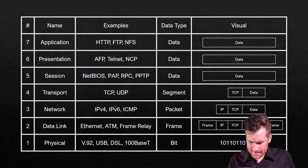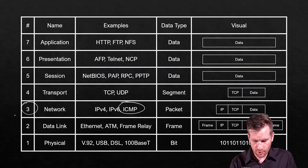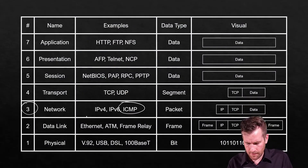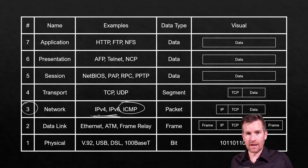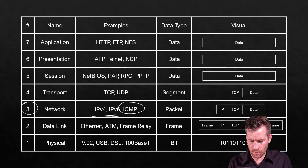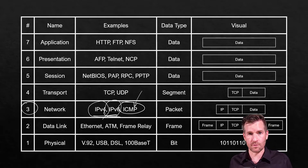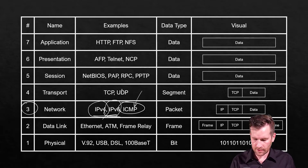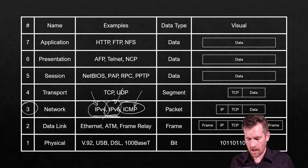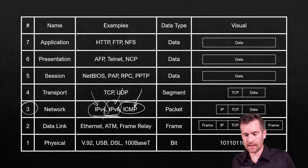We see that ICMP sits at layer 3. It sits right next to IP version 4 and IP version 6. So it is a layer 3 protocol, although it operates a little differently. Where IP version 4 and IP version 6 are used for routing, ICMP is really not used to route packets. In fact, we include an IP version 4 and IP version 6 header on the front end of our ICMP packets.